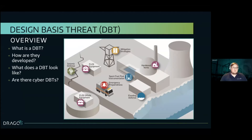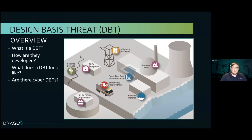Each plant will have a DBT, and the regulator, the NRC, expects them to demonstrate they can defend against it. Traditionally, DBTs are developed by analyzing credible threat intelligence and examining past nuclear security events. The output is a list of potential adversaries and their attributes, characteristics, and possible actions they may take. An analysis then determines whether specific adversaries are relevant to that site, and ultimately you get a DBT specific to that facility. Physical protection experts at that site then design the system and regularly assess it based on this DBT.